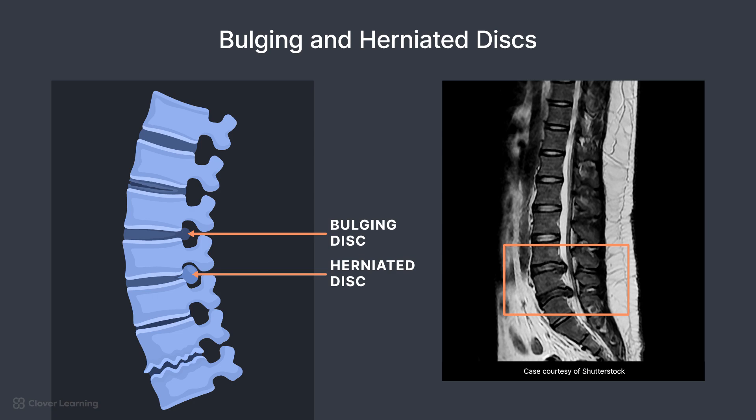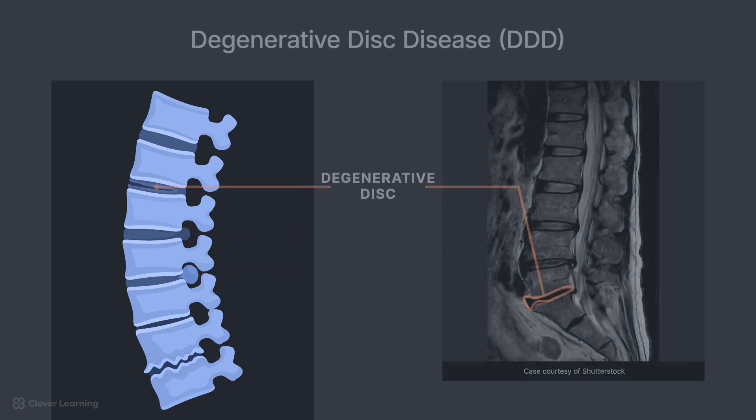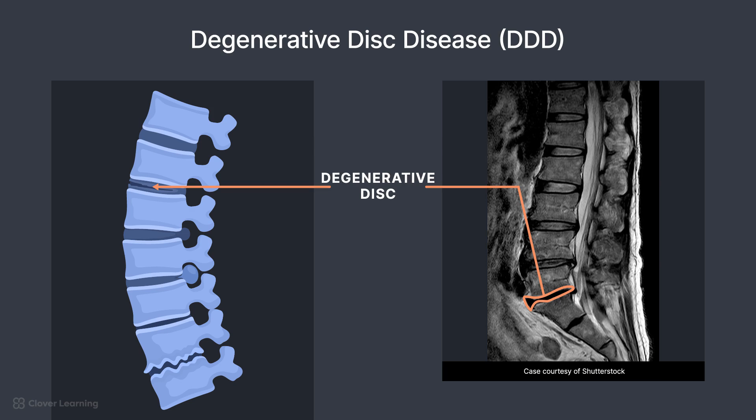Bulging and herniated discs can cause issues as sometimes they protrude posteriorly or press on spinal nerves, causing a variety of symptoms including pain, tingling, or numbness. As we age, these discs may degenerate with a reduction of cushioning in the nucleus pulposus. The discs may further degenerate into a very thin disc, resulting in portions of the vertebral end plates rubbing against each other, which is called degenerative disc disease, or DDD.